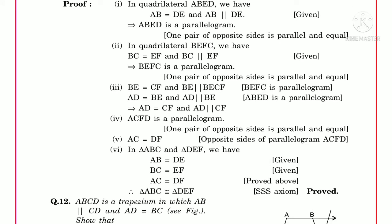Since BEFC is a parallelogram, BE equals CF and BE is parallel to CF. Since ABED is also a parallelogram, AD equals BE and AD is parallel to BE. Combining these two, we get AD equals CF and AD is parallel to CF.